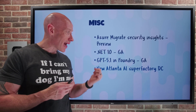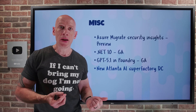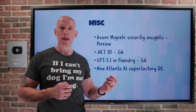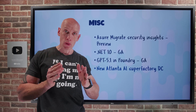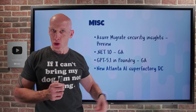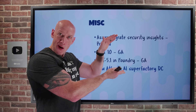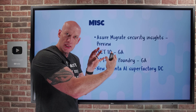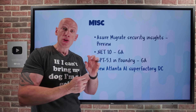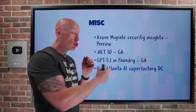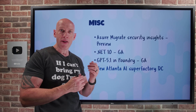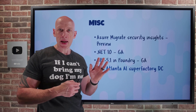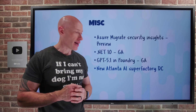Finally, there is a new Atlanta AI superfactory data center, joining Wisconsin as the second fair-water AI superfactory. It features near-zero water use with closed-loop cooling. A new two-level design enables denser GPU density with lower latency between GPUs, and a new network links the two locations together, enabling multi-site AI capability. It's focused on AI model training and inferencing at a previously unheard-of scale.